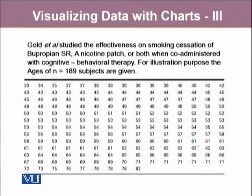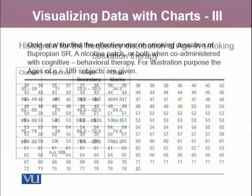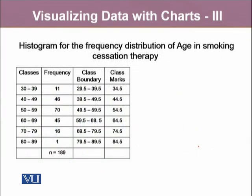Let's use this continuous variable that we have already talked about — data about the ages of respondents in a study conducted by Gould et al., who studied effectiveness on smoking cessation. So we have this continuous variable given in our data. To summarize this data, one way is to construct a frequency distribution that we already constructed in the previous modules.